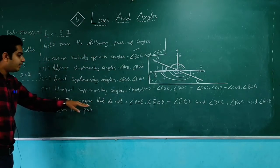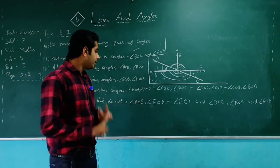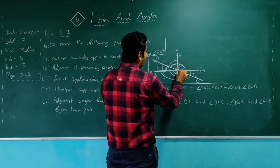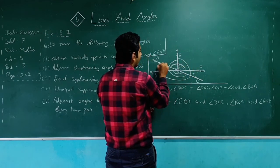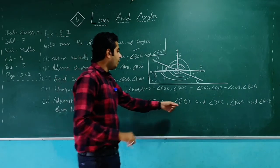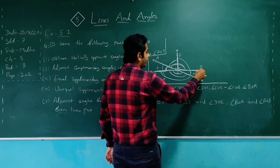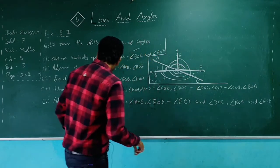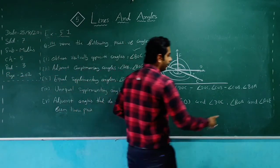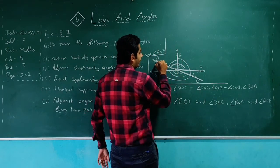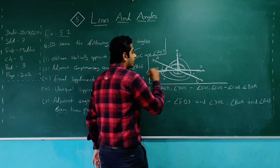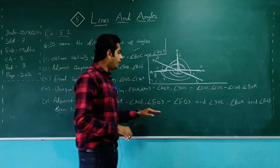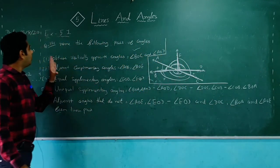Part 5: adjacent angles that do not form a linear pair. AOE and EOD are adjacent (common vertex O, common arm OE, non-common arms on either side) but do not form a linear pair. Similarly, EOD and DOC, and BOA and AOE are adjacent angles that do not form a linear pair. So we can find 3 such pairs.